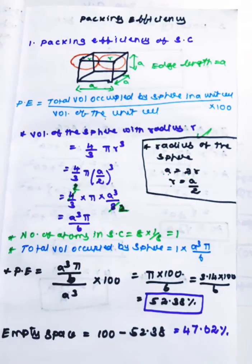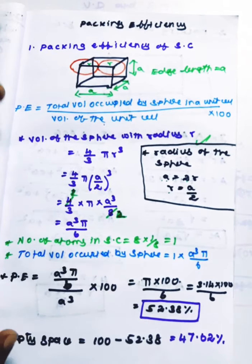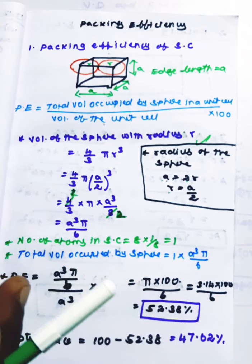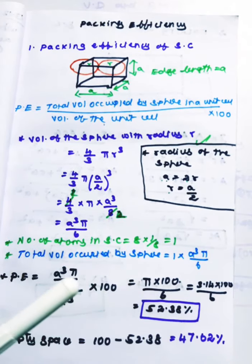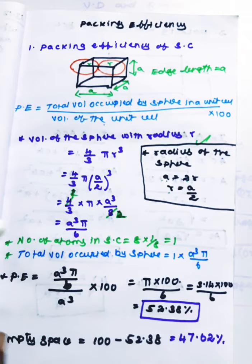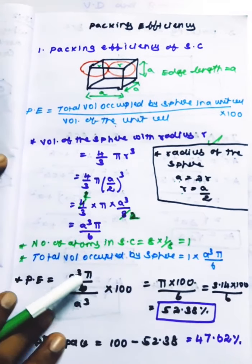Hello students, this is 12th standard chemistry. Packing efficiency — packing efficiency in a cube: simple cubic, face-center cubic, body-center cubic.